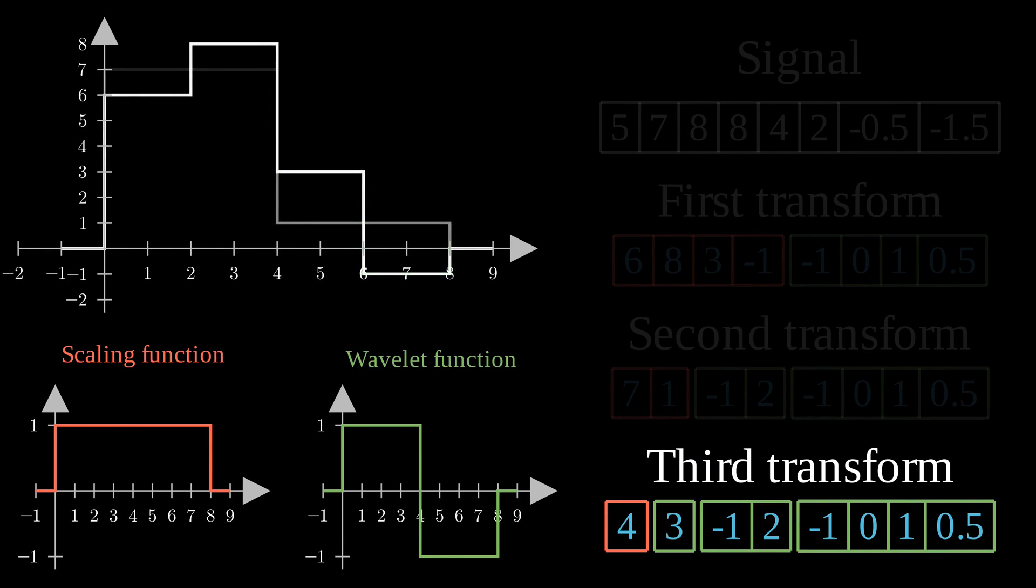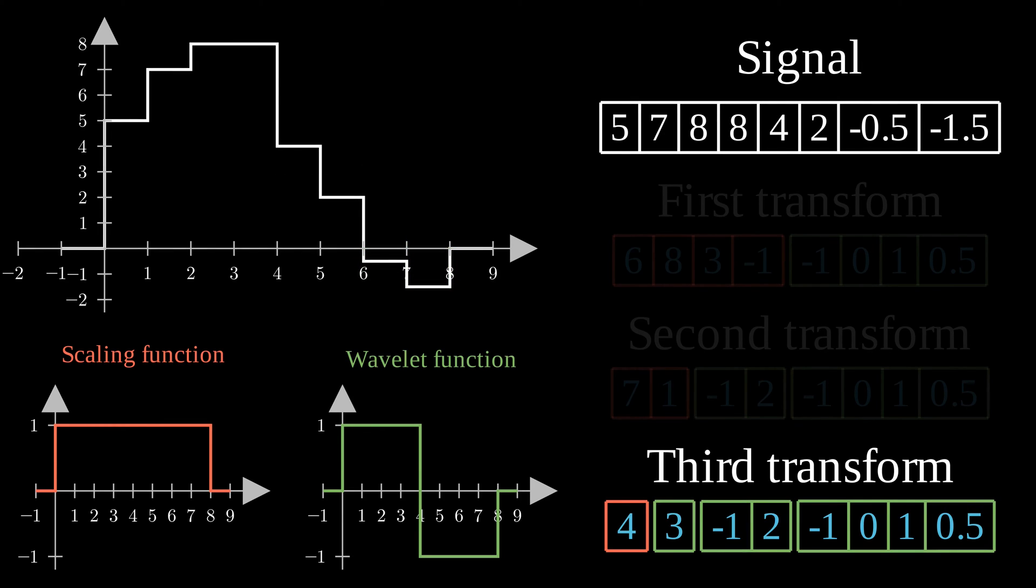And here we are, our second detail space is now represented. We still have a last detail space, composed of four values, so we will use four wavelet functions, each one spreading on a quarter of the signal. And finally, we've got our original signal back.